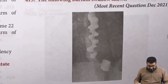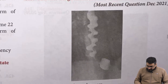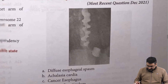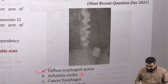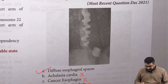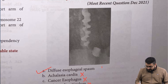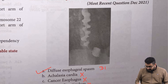Next is a straightforward image-based question. Achalasia cardia has a bird-beak sign; cancer of esophagus has a rat-tail appearance. The pattern shown here — with the characteristic image — is diffuse esophageal spasm (DES).